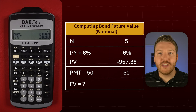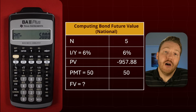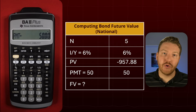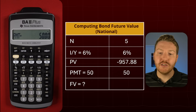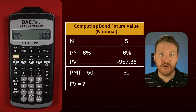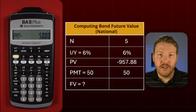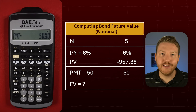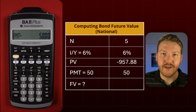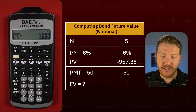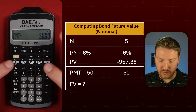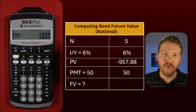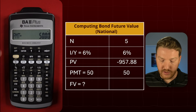Now we know that the interest rate, or required rate of return, was six percent per year, and the payment is $50. So the payment is actually less than the interest rate. This means the bond should trade at a discount, meaning the present value, or absolute value of the present value, should be less than the notional value, or the future value, at the end.